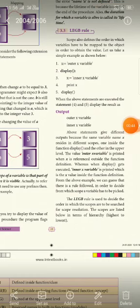This is the LEGP Rule. Let's see an example. First line is x equal to outer x variable, second line is display, third line is x equal to inner x variable, fourth line is print x, and fifth line is display.